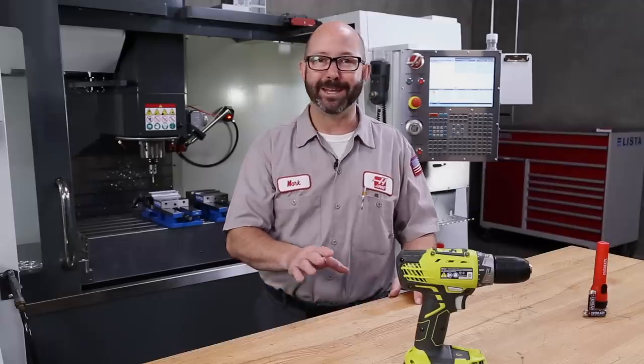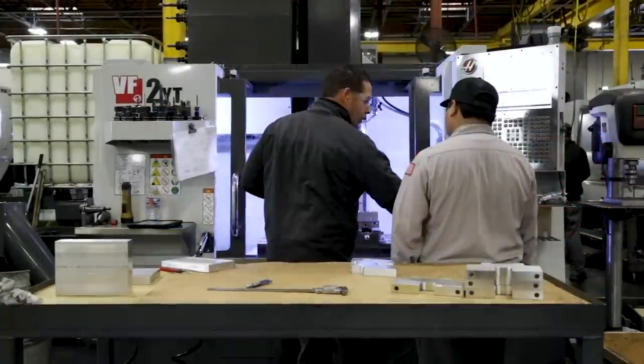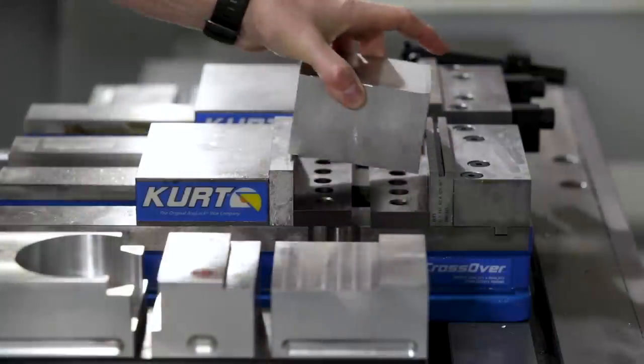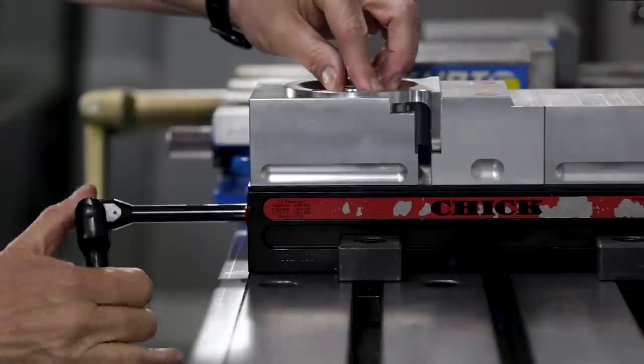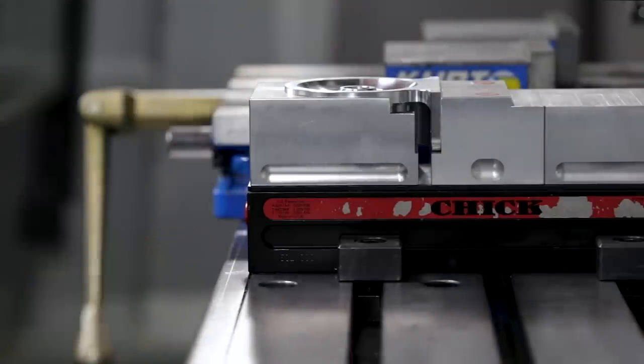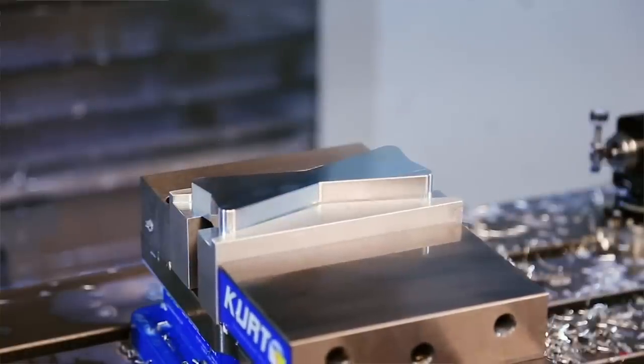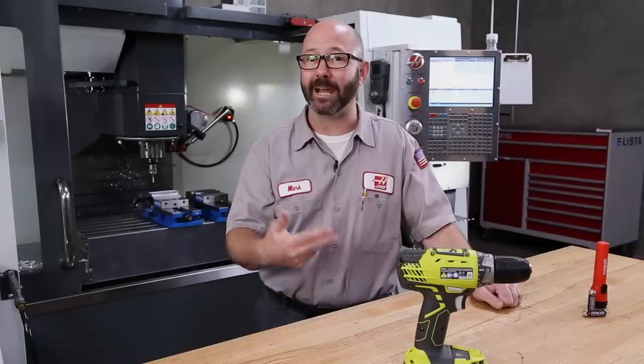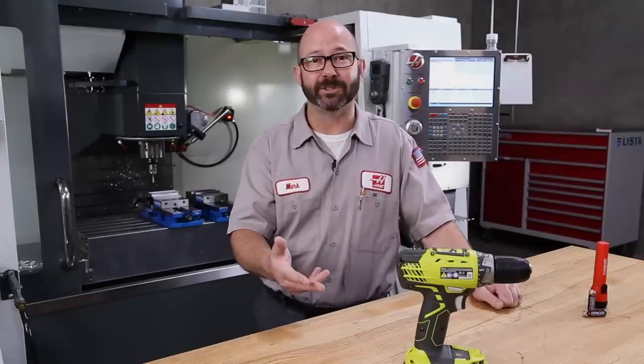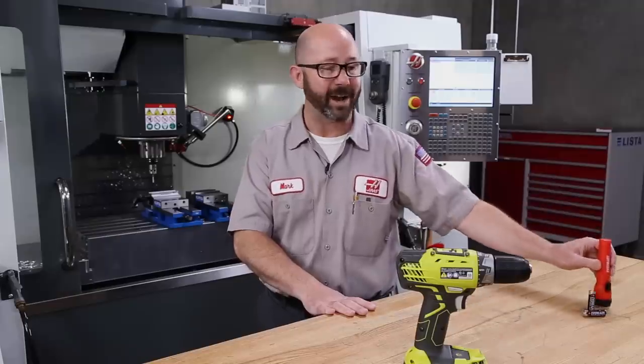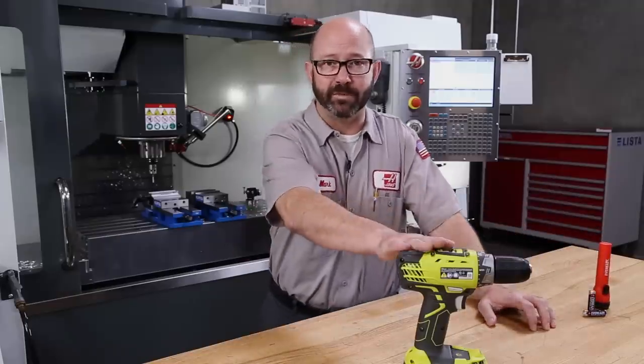Now if I'm speaking to operators directly, I'm going to say that it is a hundred percent your responsibility to load your parts correctly. Read the setup sheets. That's your job. Now if I'm speaking to CNC programmers or a manufacturing engineer who's designing a fixture, we should be designing fixtures that don't even allow the operator to load the parts backwards. We need to mistake proof these things.